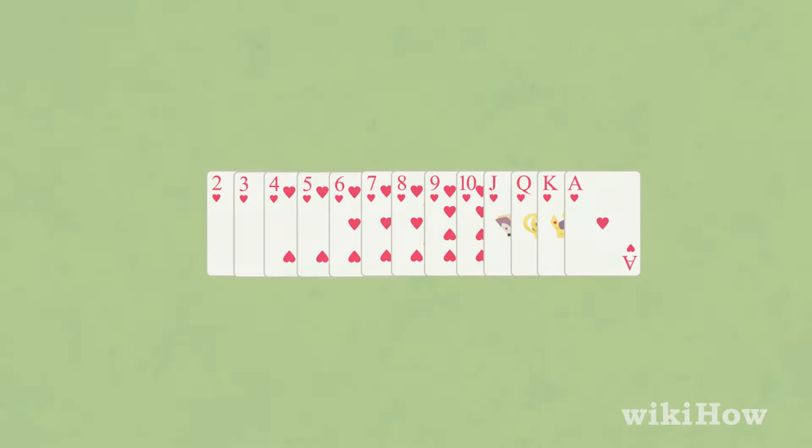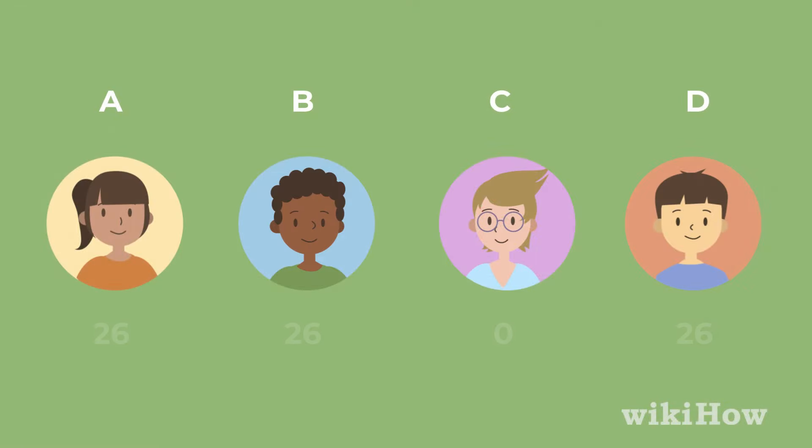If a player manages to take all thirteen hearts and the Queen of Spades in one hand, called shooting the moon, they score zero points and add twenty-six points to everyone else's score.